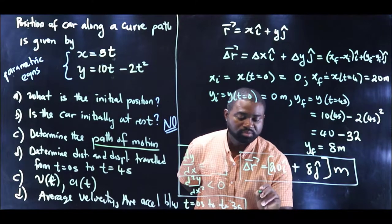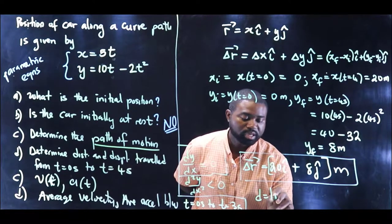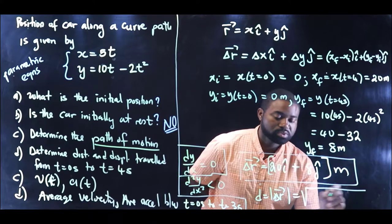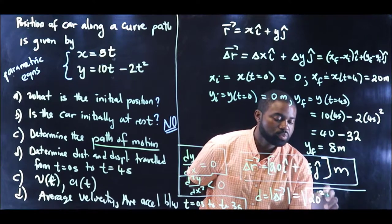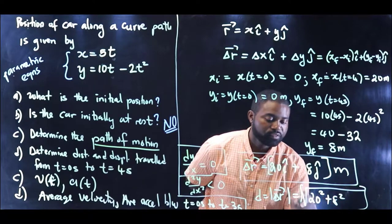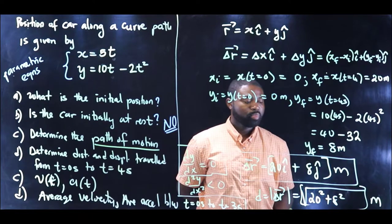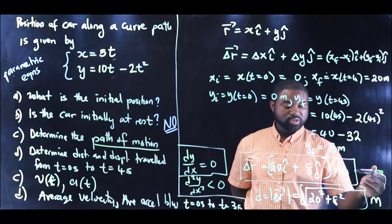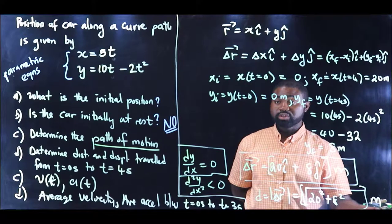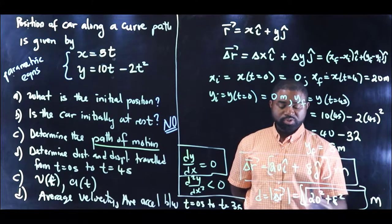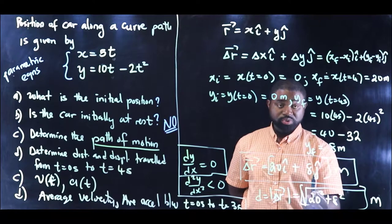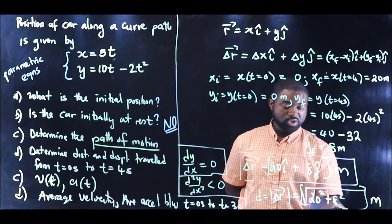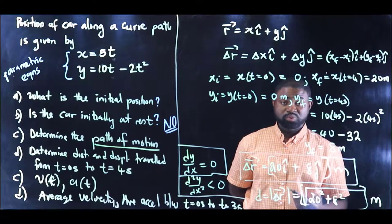Distance is the magnitude of displacement, which is going to be equal to the square root of 20 squared plus 8 squared, all in meters. You can see from this calculation that our displacement is a vector and our distance is a scalar quantity. In our displacement function we have the i and j which indicate directions, whereas in our distance equation we just have a number and a unit indicating a size or magnitude.